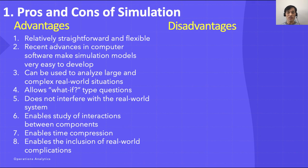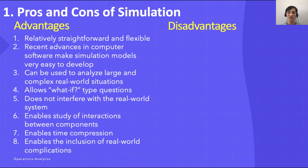Time compression is also possible with simulation. In the real world, we have to wait for 24 hours or a month to pass. However, in simulation you can compress time, run it quickly, and see how a policy would have a long-term effect. Additionally, simulation allows for the inclusion of real-world complications that most quantitative analysis models cannot permit. Mathematical models may be limited in including certain factors that might negatively affect a government or department, but they can be included in simulation to see what kind of impact they would have.